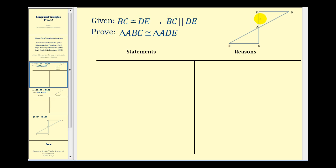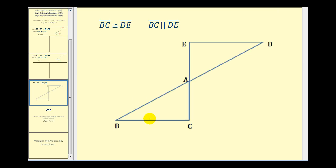Here we want to prove that triangle ABC is congruent to triangle ADE, given that segment BC is congruent to segment DE, and segment BC is parallel to segment DE. So these two segments are congruent and also parallel.